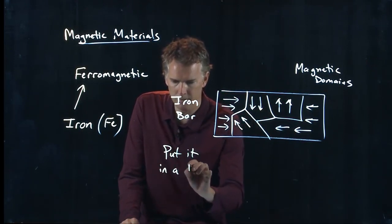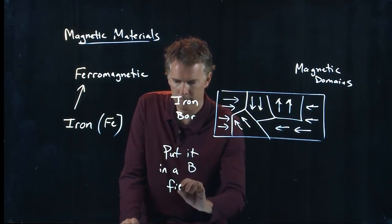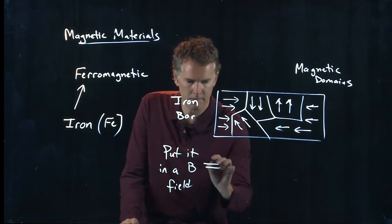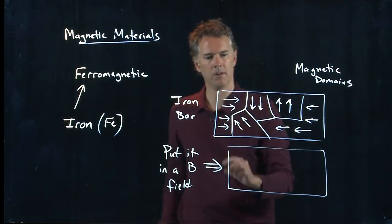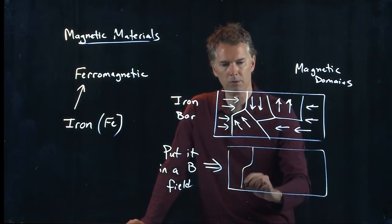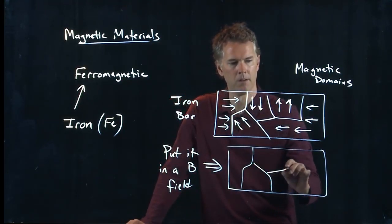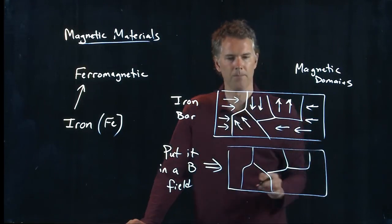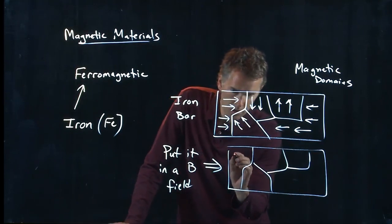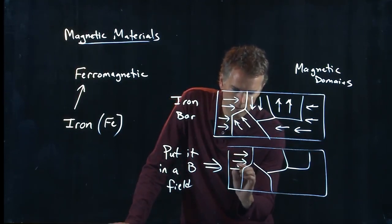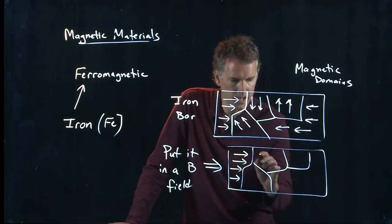In a B field, then I can get them to in fact line up. So those domains will stay the same, but with a B field pointing to the right, all of those magnetic dipoles are going to align to the right.